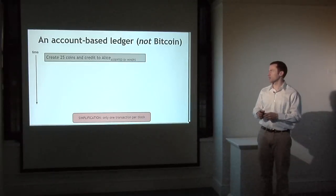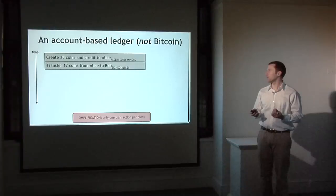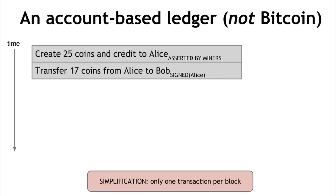The first model you might think of — actually a lot of people's mental model for how Bitcoin works — is an account-based system. You can add transactions that create new coins and credit them to somebody, and then transfer them with a transaction saying we're moving 17 coins from Alice to Bob, signed by Alice to authorize the transaction. Backing this up there would be some state: after Alice received 25 coins and transferred 17 to Bob, Alice would have an account left with 8 bitcoins.